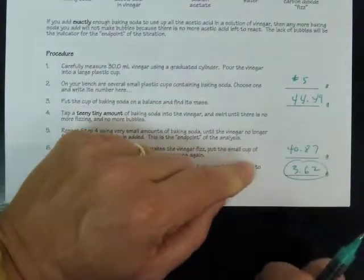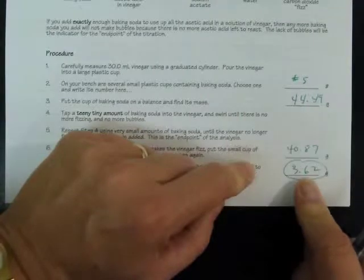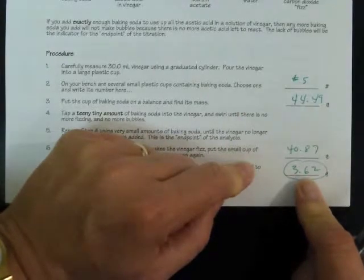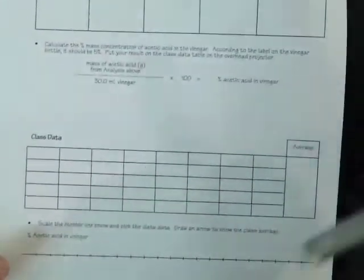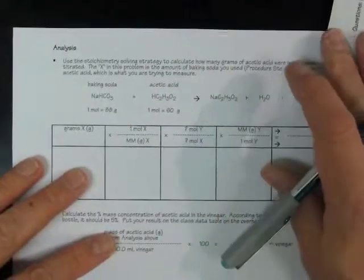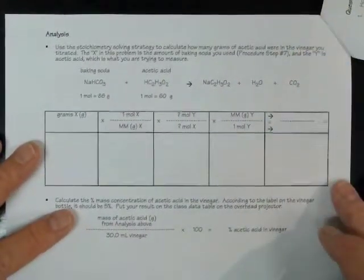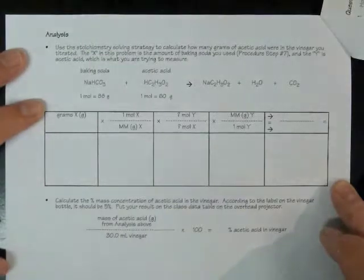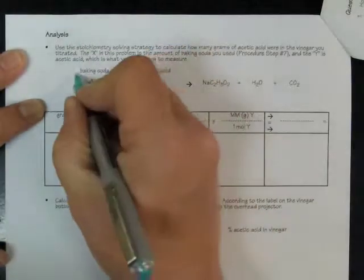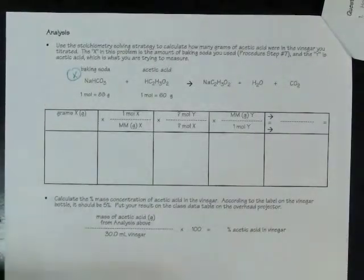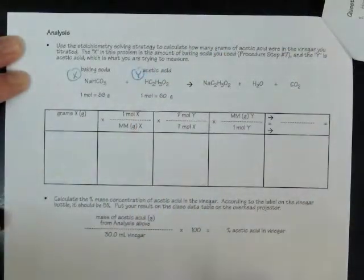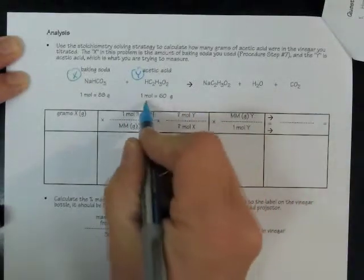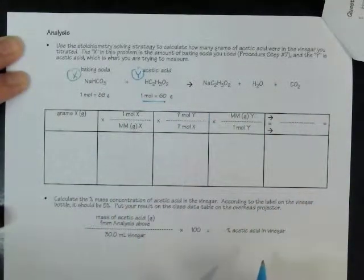That's where we're going to start with our calculations. If we know how much baking soda it took to exactly use up the acid in the vinegar, then we can calculate how much acid was in the vinegar. So let's take a look at the calculations on the back of the first page. So in our solving strategy, we've been identifying the thing that we're given to start with as X and the thing we're trying to find out as Y. The X that we know is how much baking soda it took to do the complete reaction. And what we're trying to find out is how much acetic acid there is. That's why we're doing the calculation. What you need to know about these materials is their molar masses and their coefficients in the balanced reaction equation.